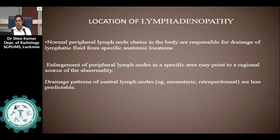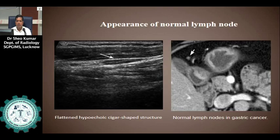Regarding the location of lymphadenopathy: normal peripheral lymph node chains in the body are responsible for drainage of lymphatic fluid from a specific anatomic location. Enlargement of peripheral lymph nodes in a specific area may point to a regional source of the abnormality. The drainage pattern of central lymph nodes, like mesenteric or retroperitoneal, is less predictable.